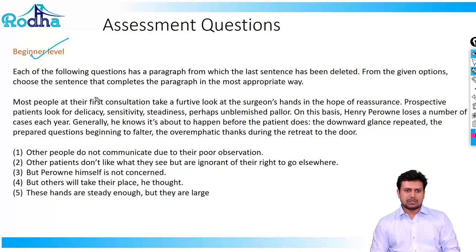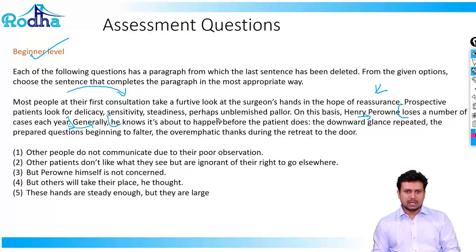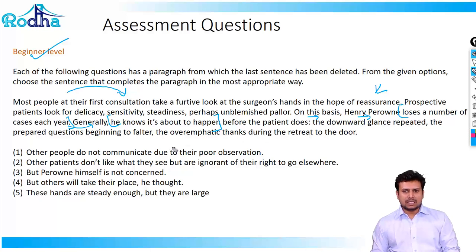What this tells us essentially is that most people look at doctors in a way that gives them a sense of reassurance, but that's not happening with Henry Perron because he tends to lose a number of cases each year. And what is even more interesting is he knows that it's about to happen — he senses why certain people would leave him, and how it ends.